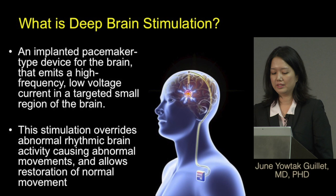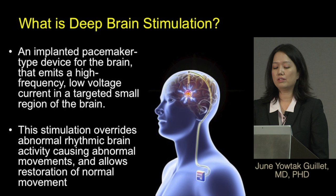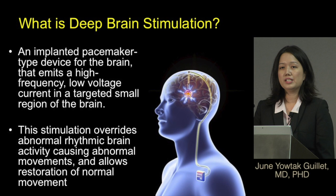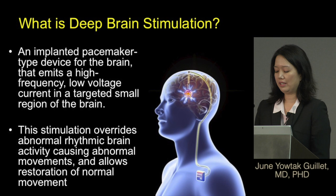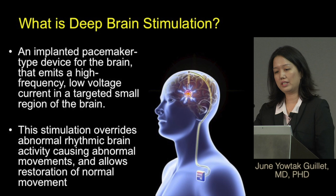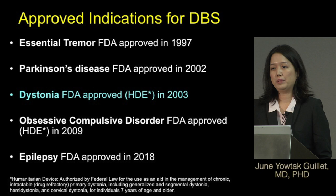So what is deep brain stimulation? It is an implanted pacemaker-type device for the brain that emits a high-frequency, low-voltage current in a targeted small region of the brain. This stimulation can override abnormal rhythmic brain activity causing abnormal movements and allows the restoration of normal movements. The diagram on the right shows an area of stimulation deep in the brain, with an electrode connected to a connector electrode that attaches to a battery or generator in the chest wall.